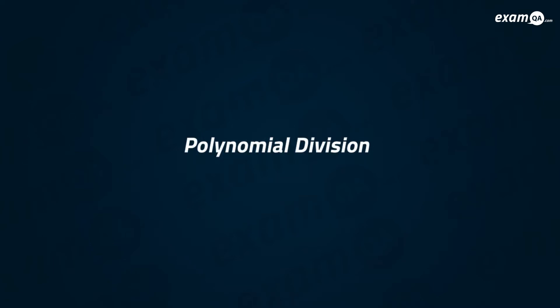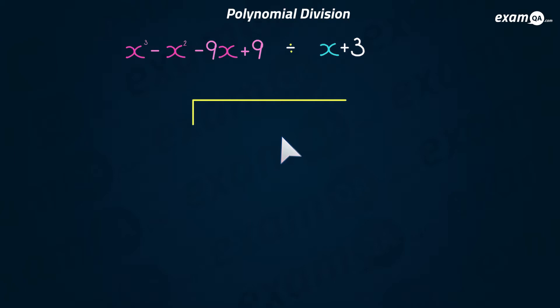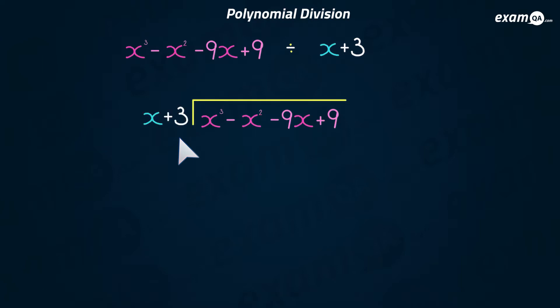In this video we're going to be looking at division with polynomials. Here we've got a cubic and we want to divide it by x plus three. The method we're going to use is the method you used back in primary school — some people call it the bus stop method, others remember it as simply long division. You start off by drawing the division bracket, putting the long polynomial expression inside it, and what we are dividing by, x plus three, outside.